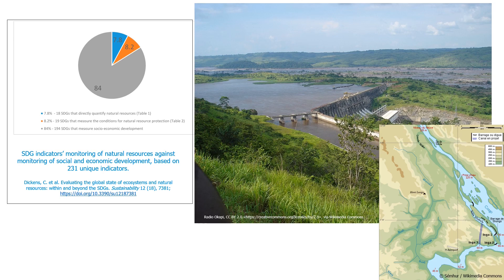It's also evident that SDGs aren't taking natural resources, including freshwater biodiversity, into account as well as they should. This pie chart shows the proportion of SDG indicators that actually measure natural resources or their protection, which is less than 10% in each case, versus 84% for socioeconomic-focused indicators. These images on the right are of the Inga Dam complex that threatens the biodiversity of the Lower Congo River — you can see the rapids in the background.